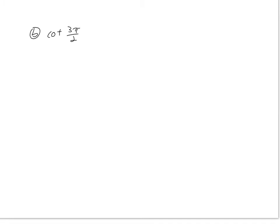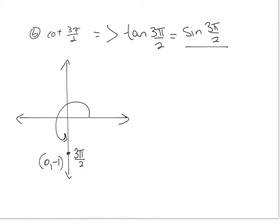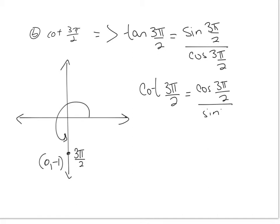Now let's find the cotangent of 3π over 2. 3π over 2 is 270 degrees, and the coordinate there is (0, −1). We know the reciprocal of tangent is cotangent, and tangent of 3π over 2 equals sine of 3π over 2 over cosine of 3π over 2. Therefore, cotangent of 3π over 2 is cosine of 3π over 2 over sine of 3π over 2. Cosine of 3π over 2 is the x coordinate, which is 0. Sine of 3π over 2 is the y coordinate, which is −1. So the answer is 0 over −1, which equals 0.